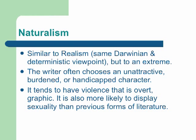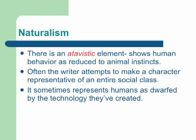The writer often chooses an unattractive, burdened, or handicapped character. It tends to have violence that is overt and often graphic, and is more likely to display sexuality than previous forms of literature. There is an atavistic element to naturalism — showing human behavior as reduced to animal instincts. Often the writer attempts to make a character representative of an entire social class.